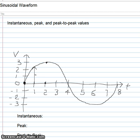At t equal to 5 seconds, the voltage is equal to approximately minus 2.5 volts. The instantaneous voltage or current is represented by the lowercase letter V or I.